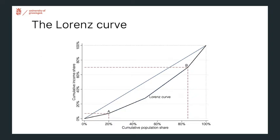If you then connect all the points represented by each income group, you get the Lorenz curve. In this case there are four different income groups. The fourth group — less than 20% of the population — earns about 30% of the income, getting you to 100% of the population and 100% of the income share. This is clearly the richest group in this economy.